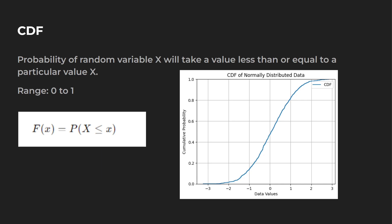Let's look at this graph — I think this is probably the easiest way to explain it. So let's say you're trying to find a value that's going to be less than one. We go over to one and go all the way up, and you can see it's a little bit above 0.8. So this tells us we have essentially an 83% probability that the value in this distribution is going to be less than 1.